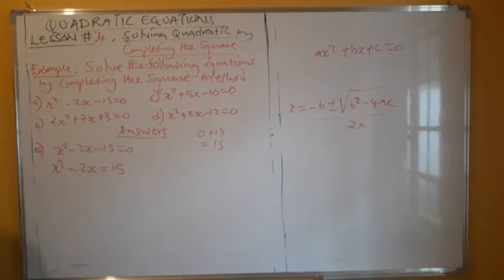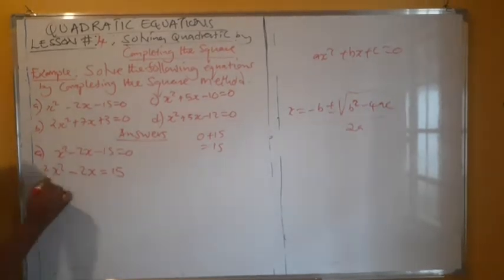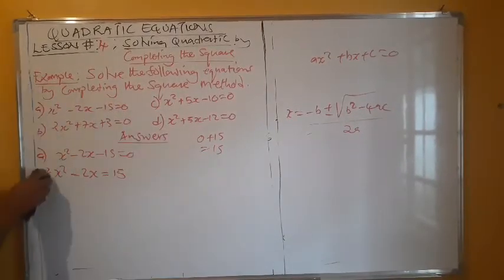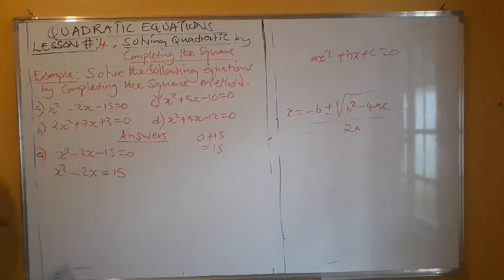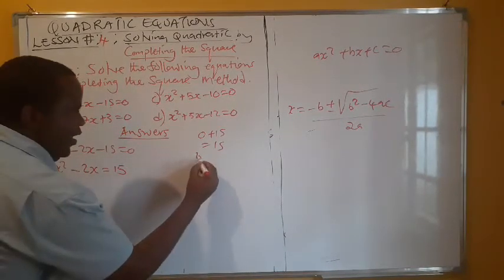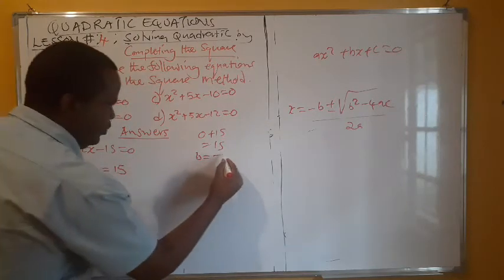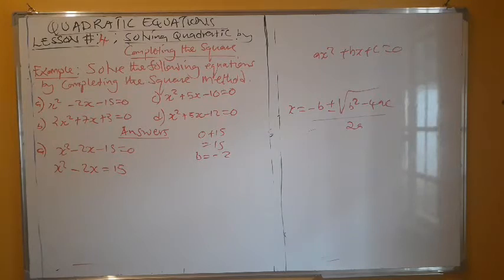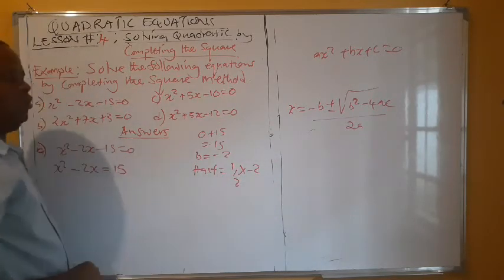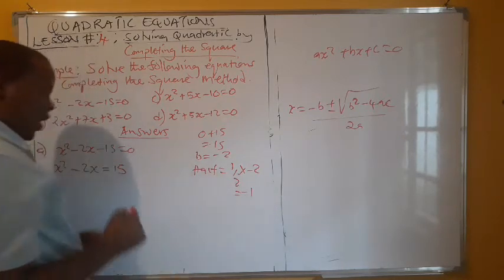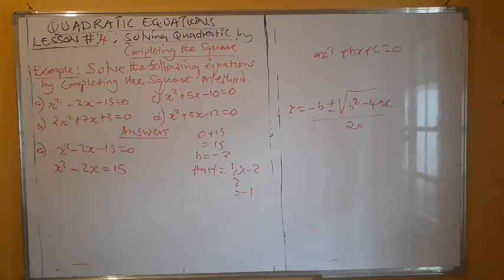Step two: you must ensure that the coefficient of x squared is 1. If we had any other number, say 2, we would have divided throughout by 2. Here our coefficient is already 1. Then the next thing is to identify b. In this case, b is negative 2. Now you find half of b — half times negative 2 — and you get negative 1.